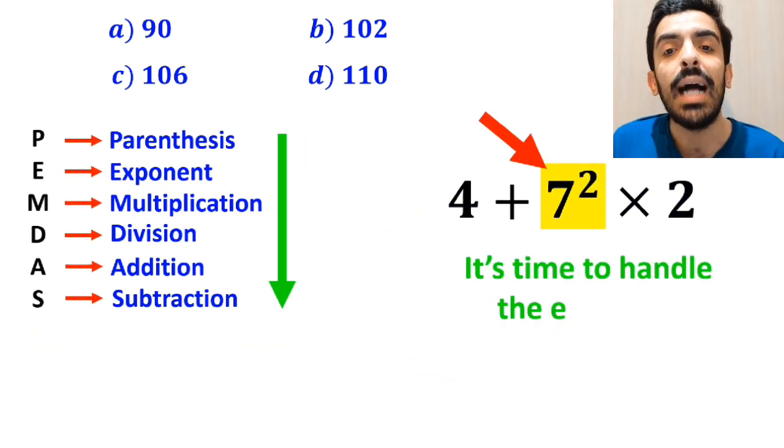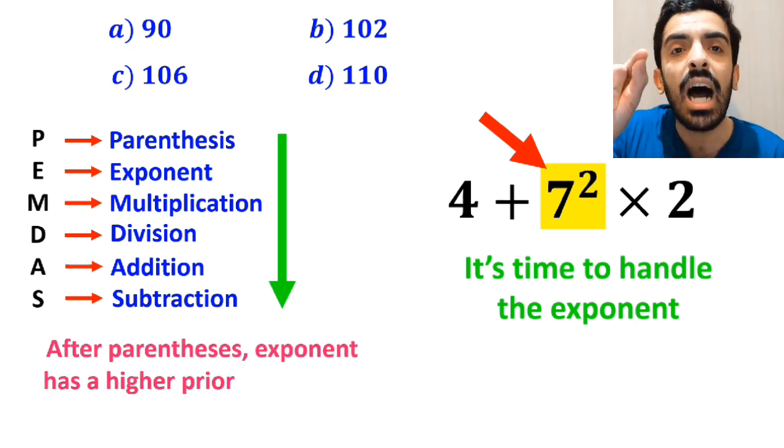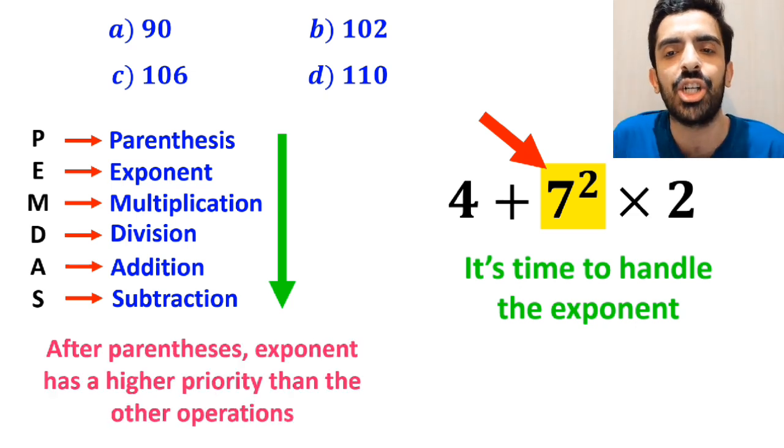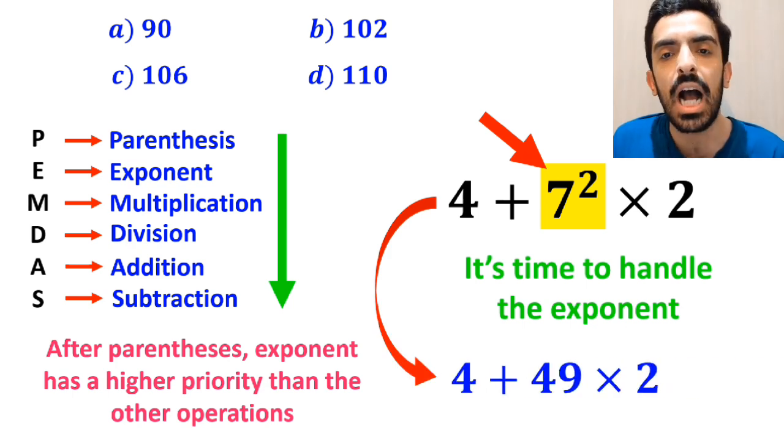And the next step, it's time to handle the exponent, because after parenthesis, exponent has a higher priority than the other operations. So, we rewrite this expression as 4 plus 49 times 2.